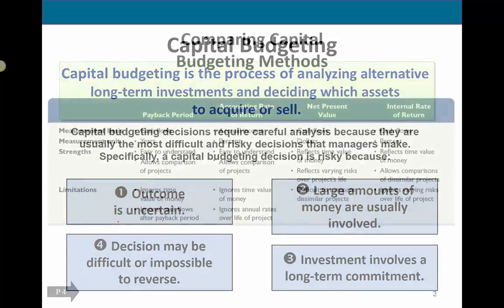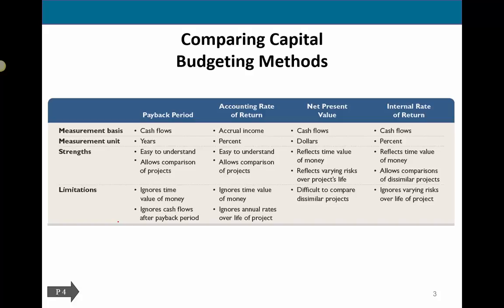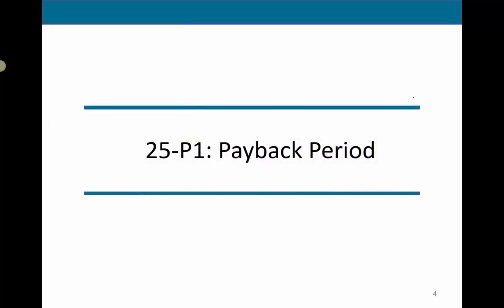To evaluate capital budgeting decisions, we have four methods: payback period, accounting rate of return, net present value, and internal rate of return. Net present value and internal rate of return involve time value of money concepts. If you've done business math or worked with future and present values, that'll be helpful — if not, we'll learn together.